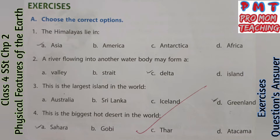Choose the correct options. First: The Himalayas lie in — Tick A, Asia. Second: A river flowing into another water body may form a — Tick C, Delta.